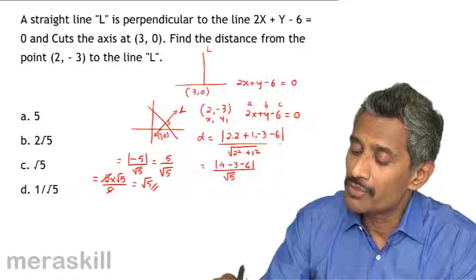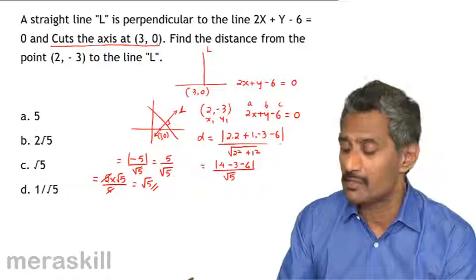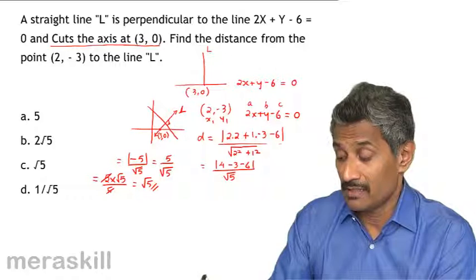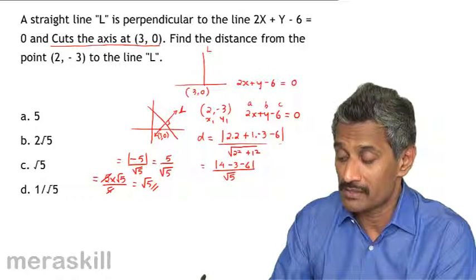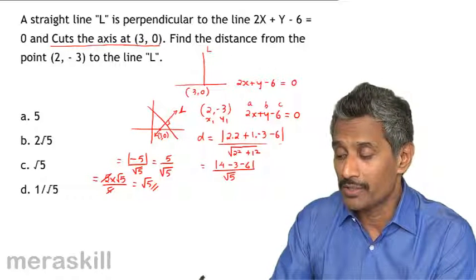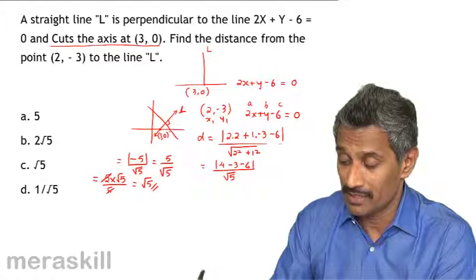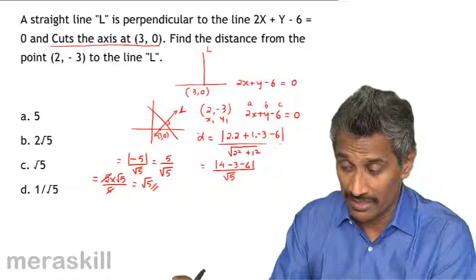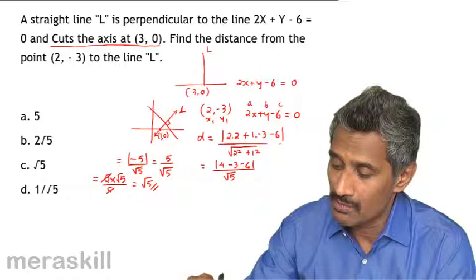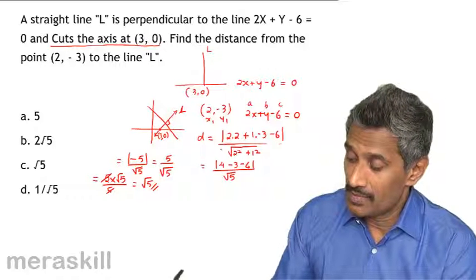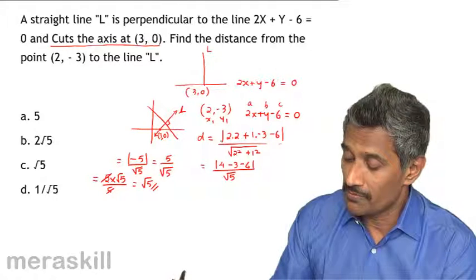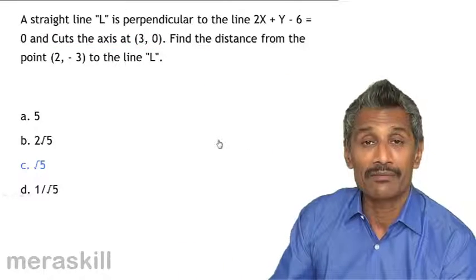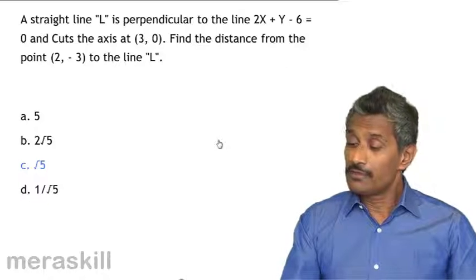Now this is a slightly deceptive question, because some information given is not needed. The fact that line L cuts the x-axis at (3, 0) is not used anywhere. The point (2, -3) is somewhere down here, and its distance from line L is what we need. So (3, 0) is redundant information. The question simply asks: find the distance from the point (2, -3) to line L. The answer is √5, which matches the option.